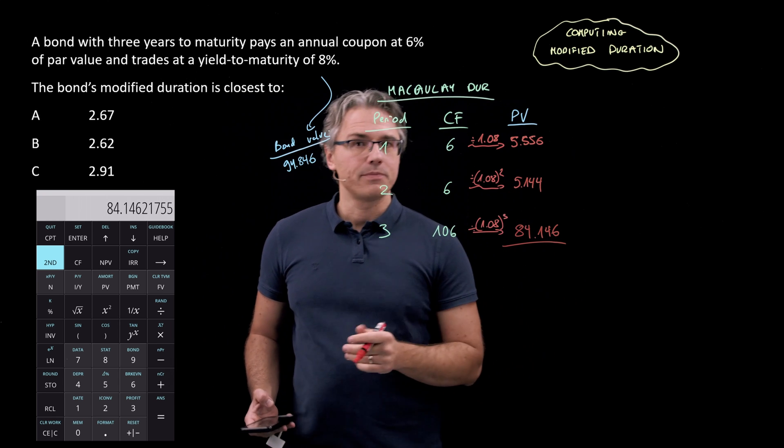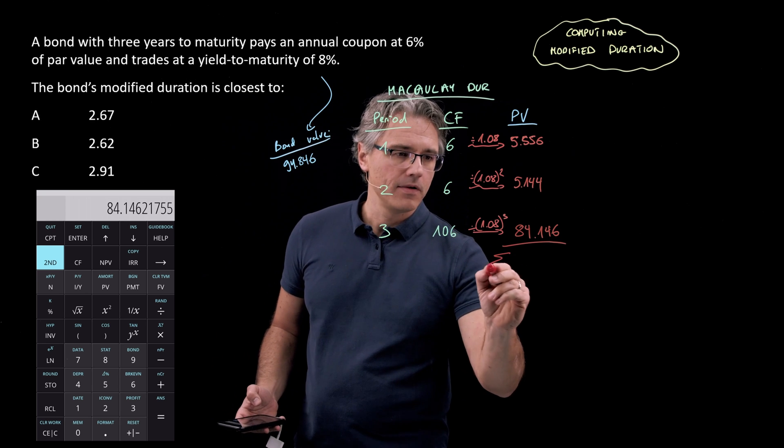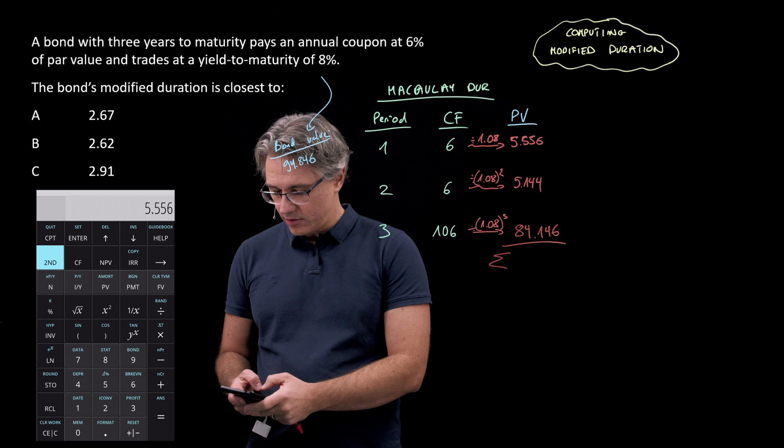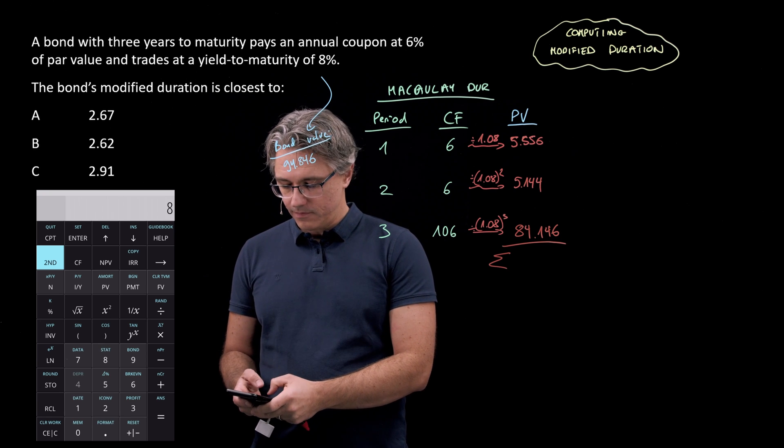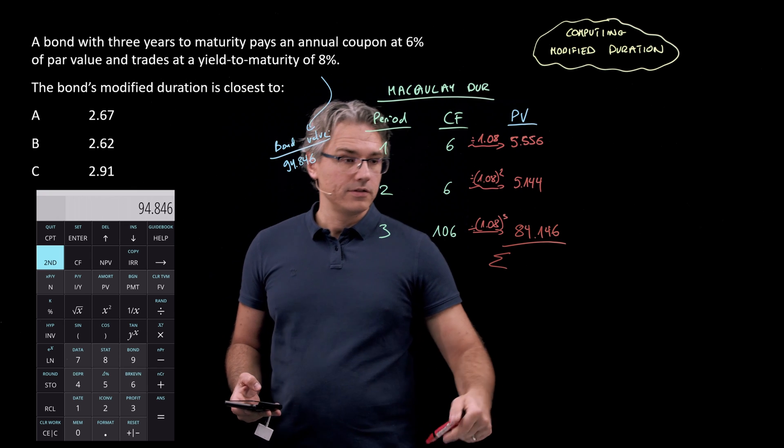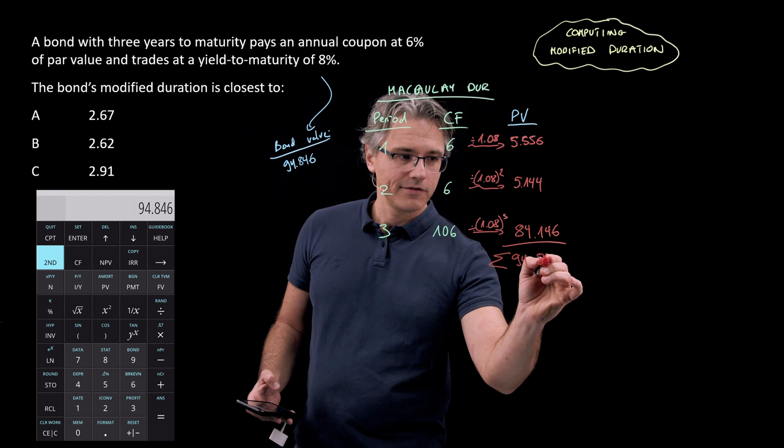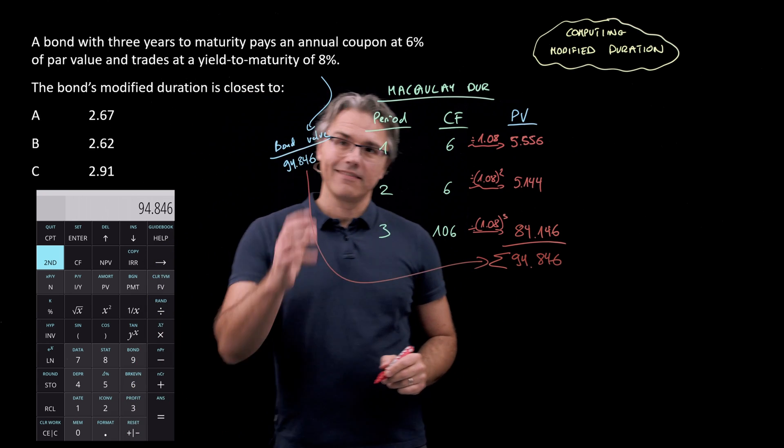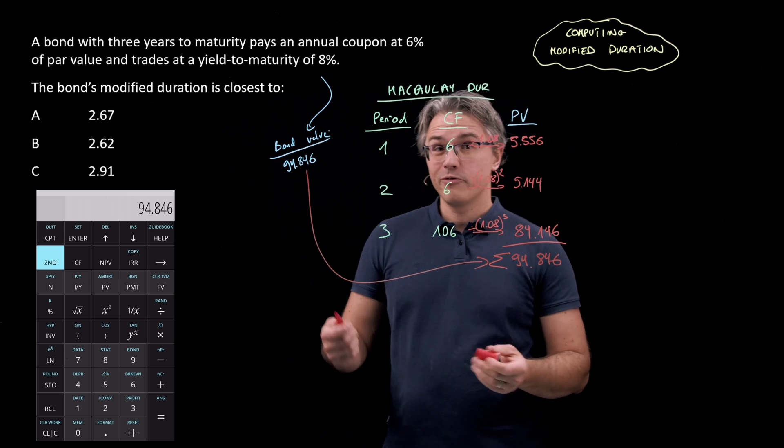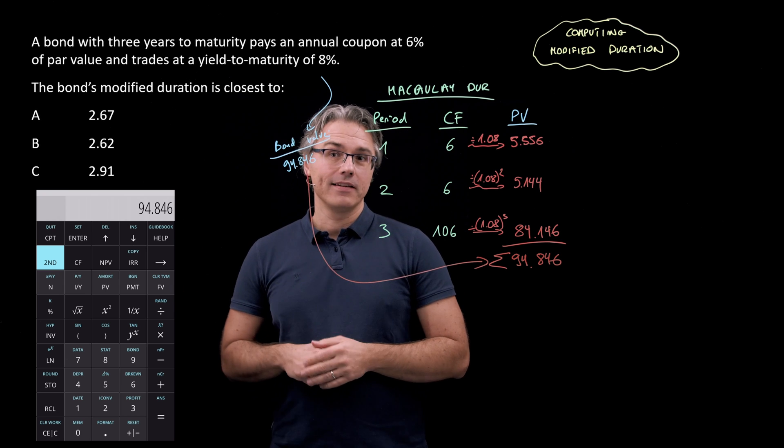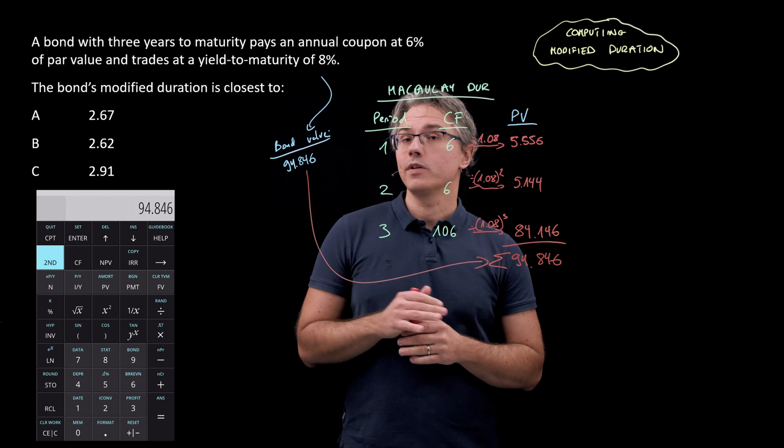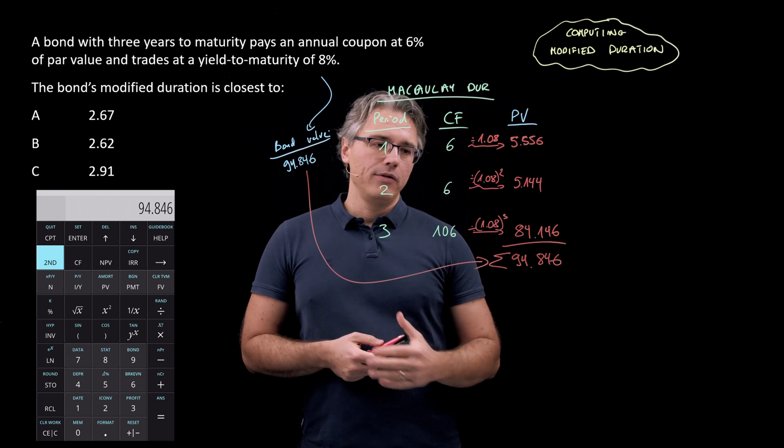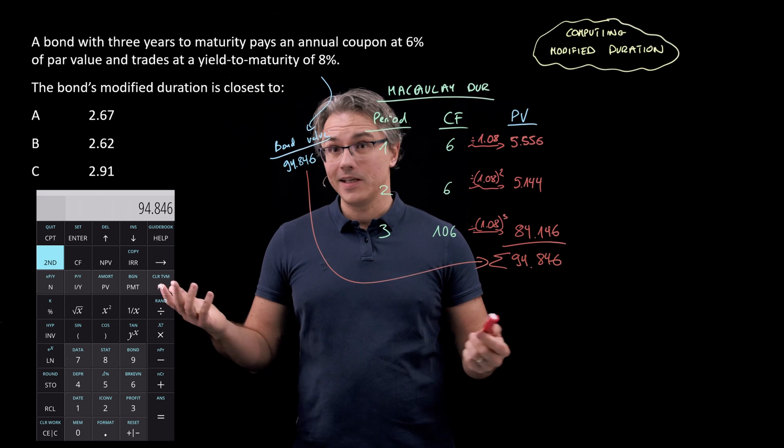If we add these present values up, if we compute their sum, hopefully you know what we should get. 5.556 plus 5.144 plus 84.146. Well, I've got 94.846, which is actually the same as the value of the bond. Now theoretically I didn't need to compute this bond value, but I wanted to do it upfront so as to show you that doing the yield to maturity computation using the time value of money worksheet yields the same result as discounting the individual cash flows associated with the bond to their present values and then computing the sum. It's the same thing.